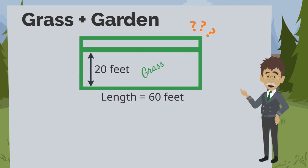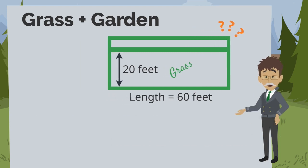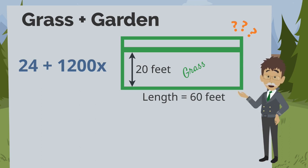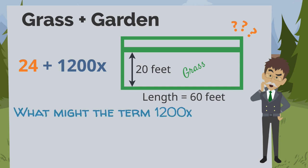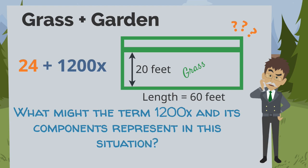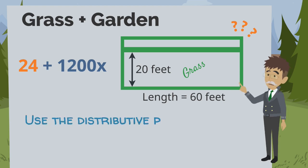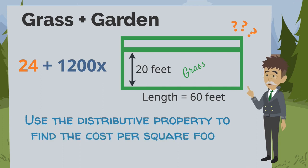I decide to put grass seed down, but I must rent a spreader. The expression 24 plus 1200x represents the cost to put down grass seed, with the cost of the spreader being $24. What might the term 1200x and its components mean in this expression? Apply the distributive property to the expression to find the cost per square foot.